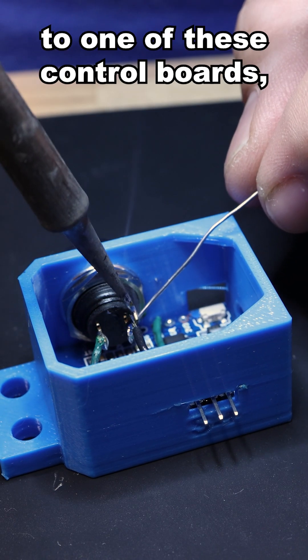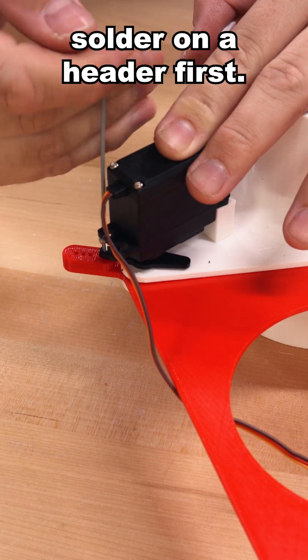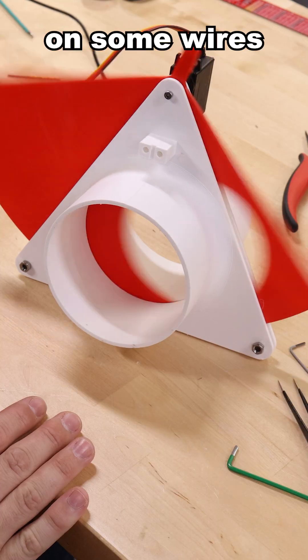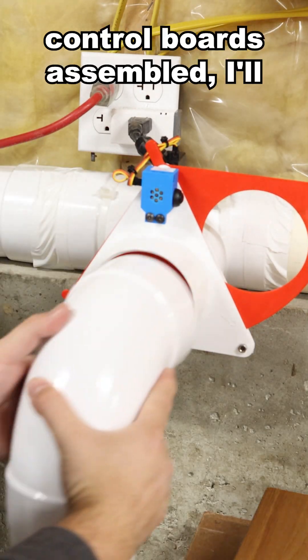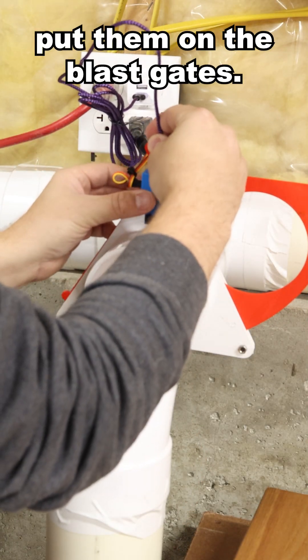In order to connect the servo to one of these control boards, I need to solder on a header first, and I also need to solder on some wires for the push button that will manually control the blast gate. Once I get all four of these control boards assembled, I'll put them on the blast gates.